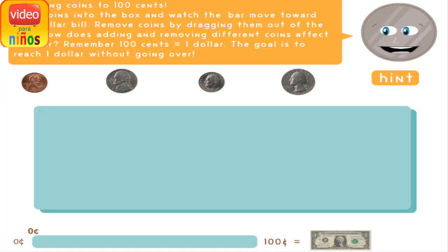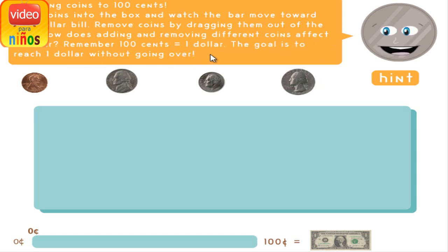Counting coins to 100 cents. Drag coins into the box and watch the bar move toward the dollar bill. Remove coins by dragging them out of the box. How does adding and removing different coins affect the bar? Remember, 100 cents equal one dollar. The goal is to reach one dollar without going over.